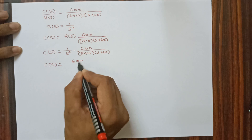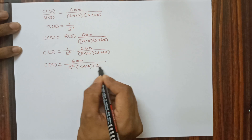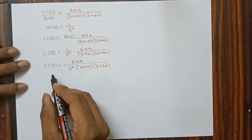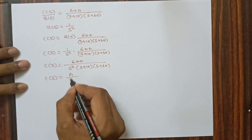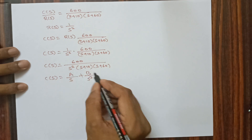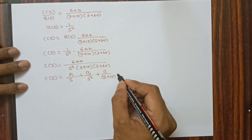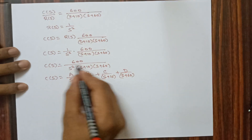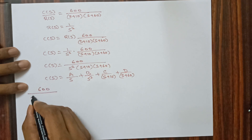Rewriting, C(s) = 600 / [s²(s+10)(s+60)]. Applying partial fractions, we write C(s) = A/s + B/s² + C/(s+10) + D/(s+60).